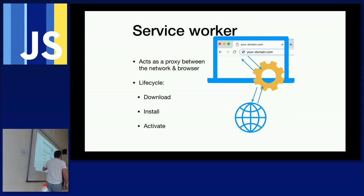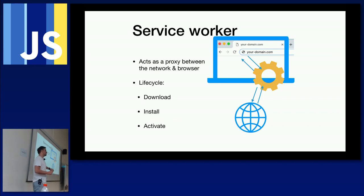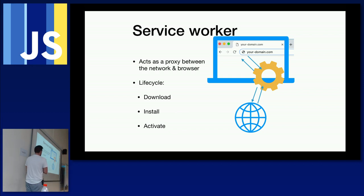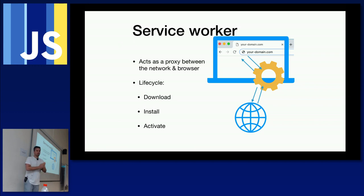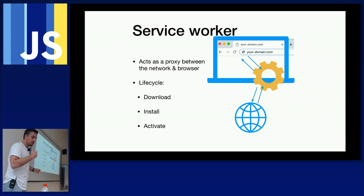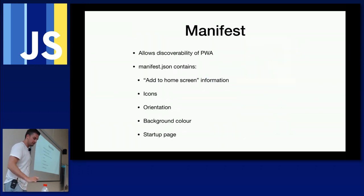Having every request and response pass through the service worker enables us to do whatever we want with that cycle — massage the request, take responses and put them into the cache. This is how we utilize the Service Worker and Cache API to make our website work offline. The service worker is the key that enables a Progressive Web Application because it can intercept these requests.